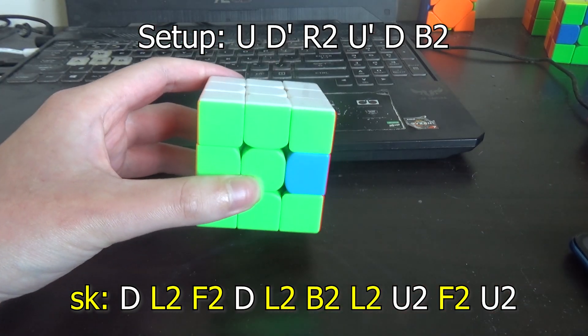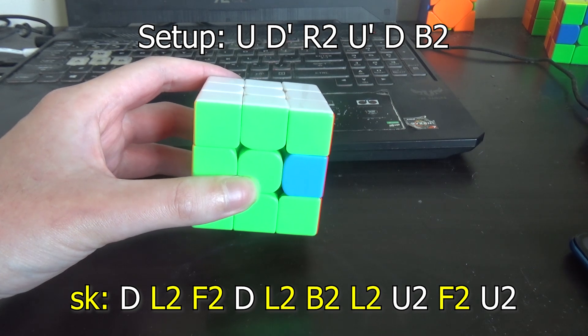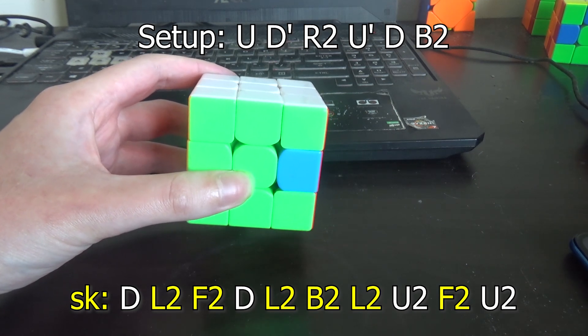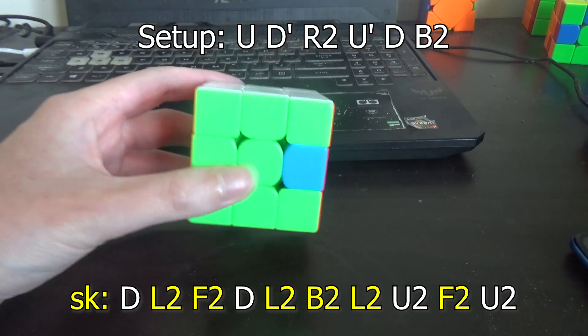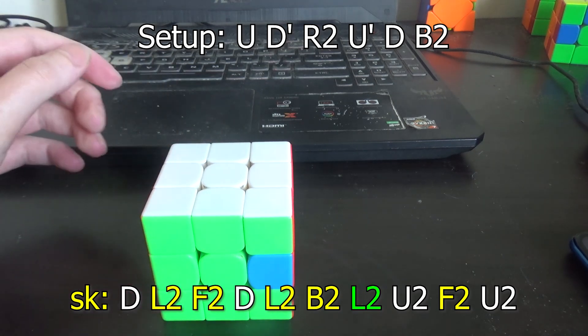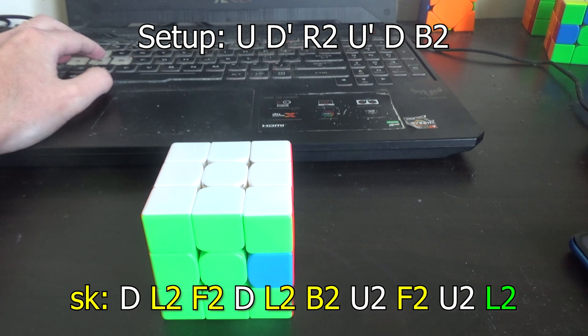To cancel 8 moves you need the move before or after that U2F2U2 to be adjacent to that middle move. So L2 is adjacent to F2 so we can insert an 8 mover here. But really all the 8-8 algorithm does is it takes this L2 and moves it to the end. So it's now U2F2U2L2.